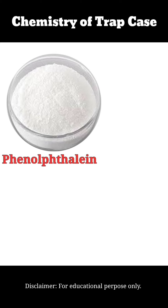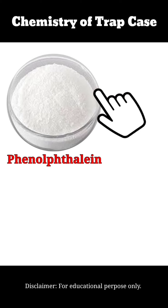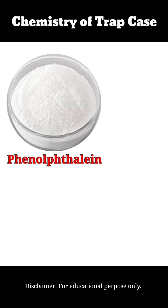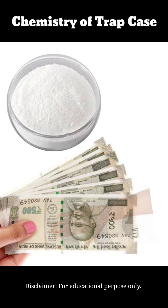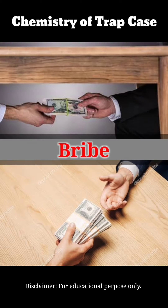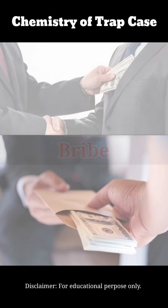Generally in this type of trap cases, phenolphthalein is used. Phenolphthalein is a smooth white powder material. This powder is applied in small quantities on the currency notes. When such notes are offered as bribe, the phenolphthalein powder is transferred to objects such as hands, bags, or pockets of the targeted person.